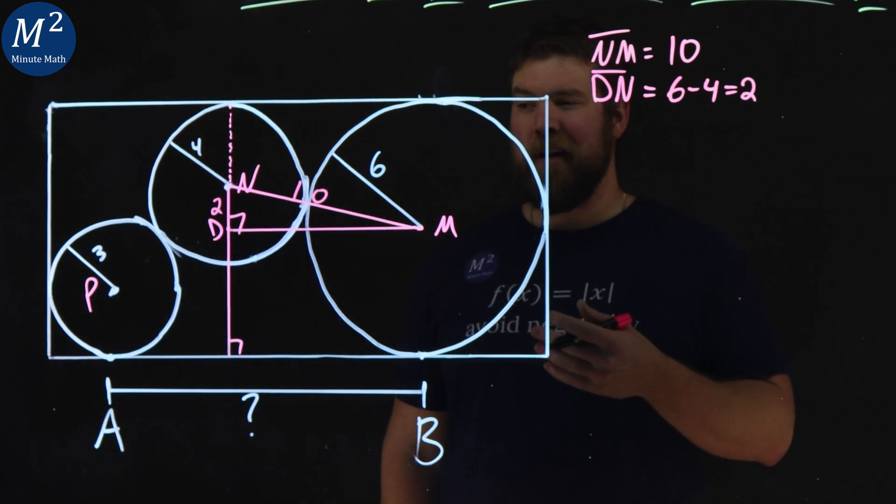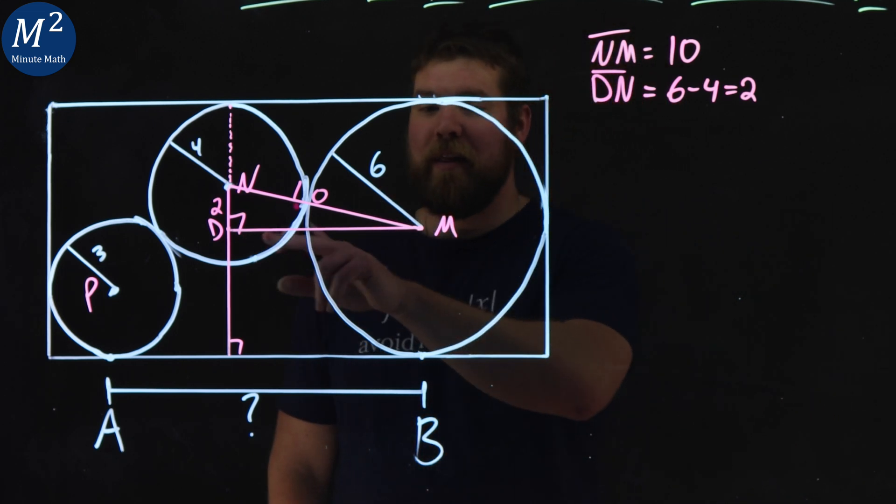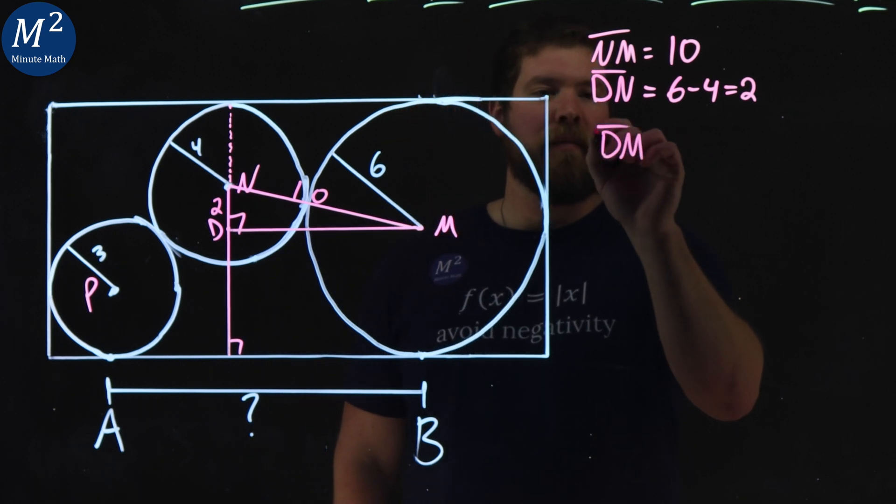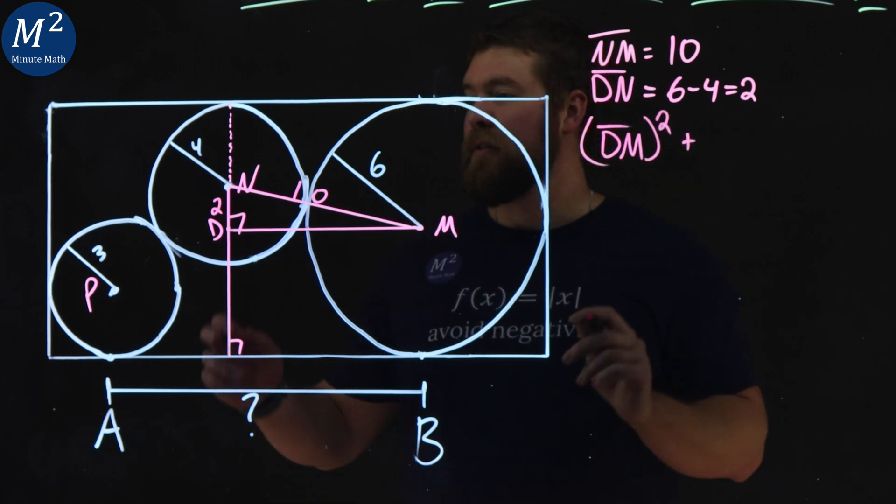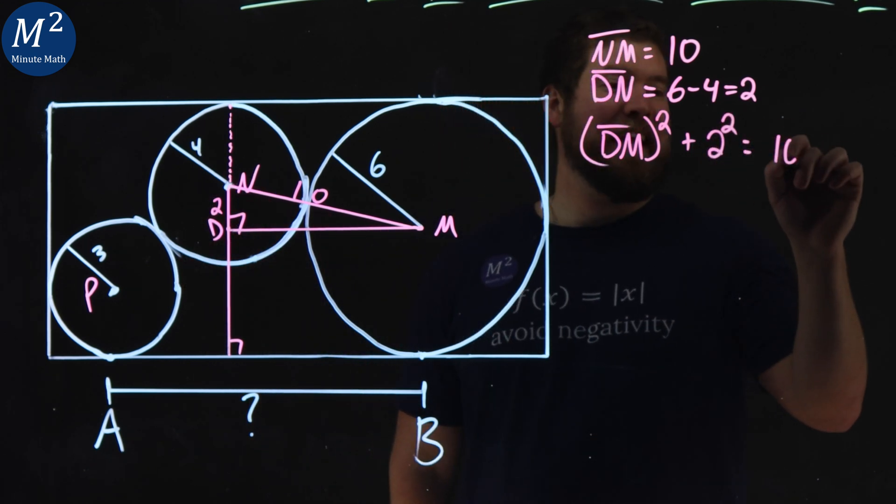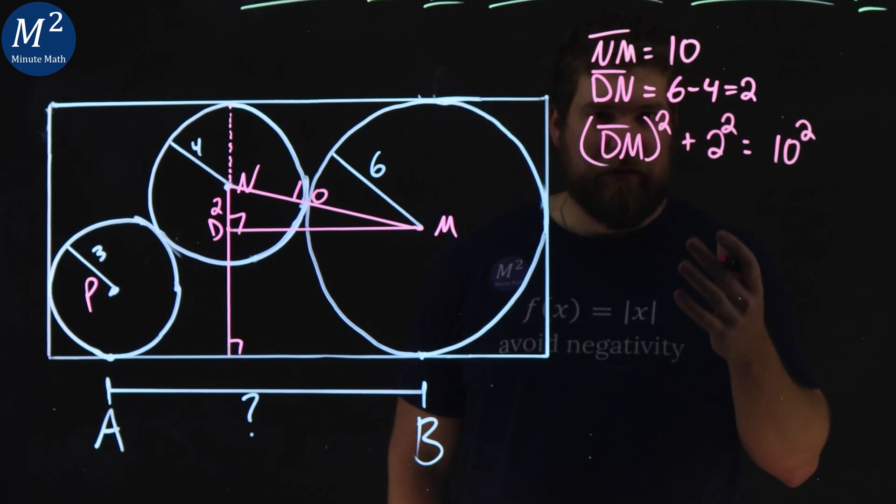So with that, we have a right triangle. We've got two side lengths. We can find the third. Let's find the length of DM. So DM, that length all squared, plus 2 squared, gives me my hypotenuse squared, which is 10 squared. Now, from here, we want to solve for DM. So we have DM all squared, plus 2 squared is 4, equals 10 squared, 100.